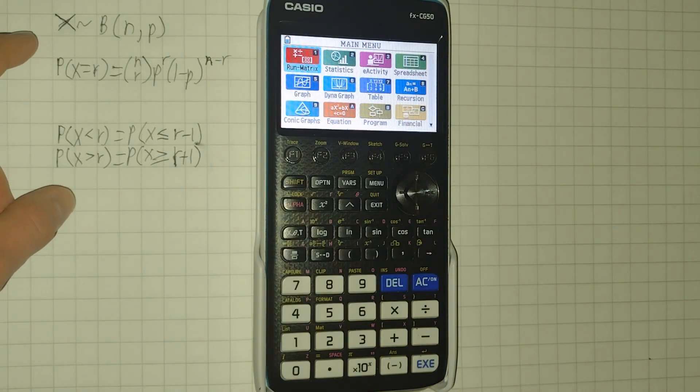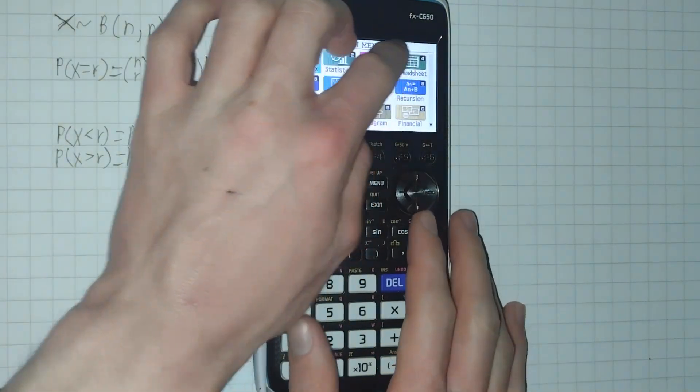Hello, in this video I'm going to go over how you can calculate probabilities on the binomial distribution using your Casio FXCG50 graphing calculator.